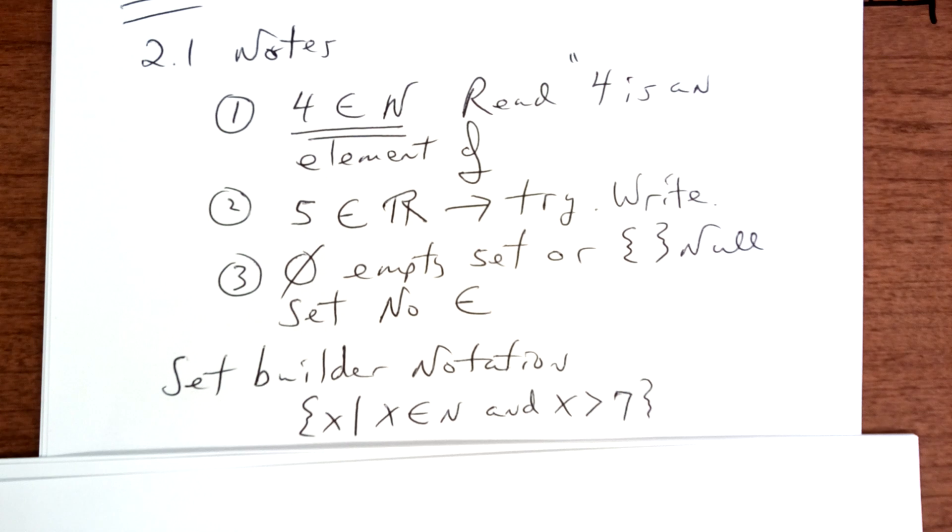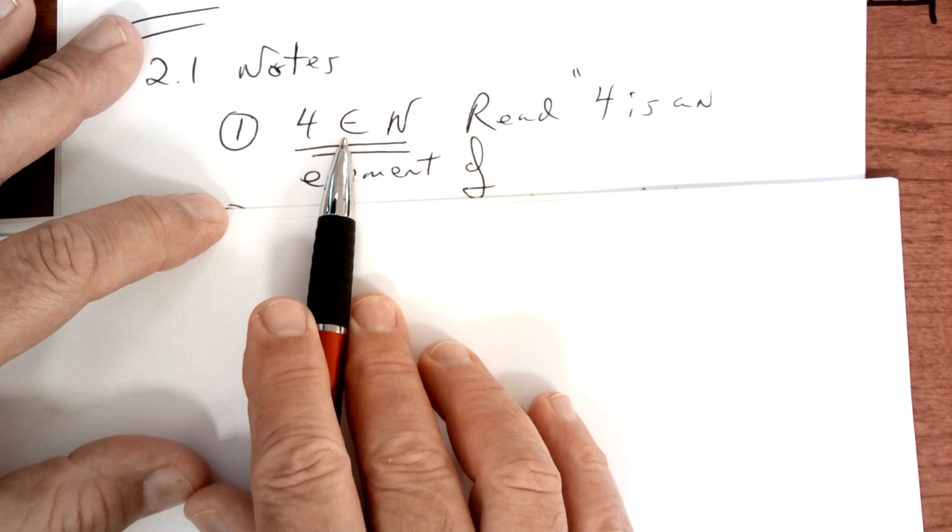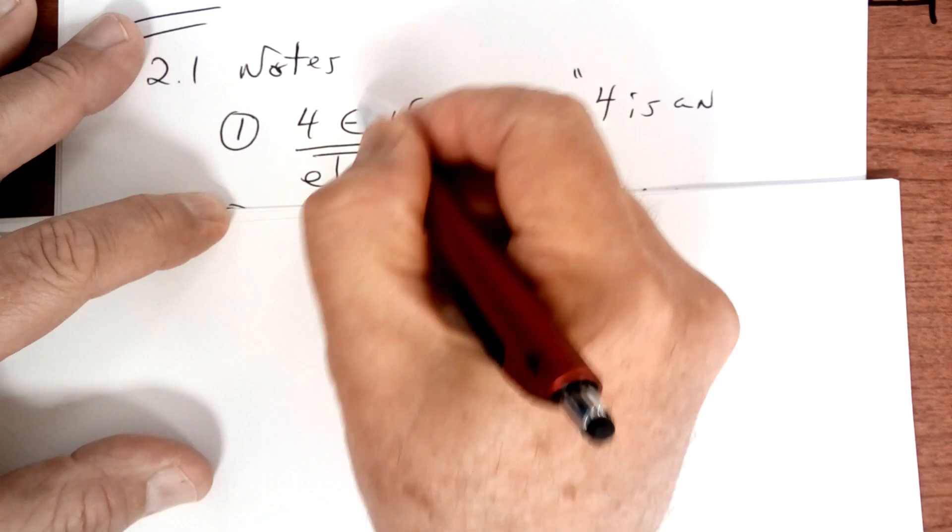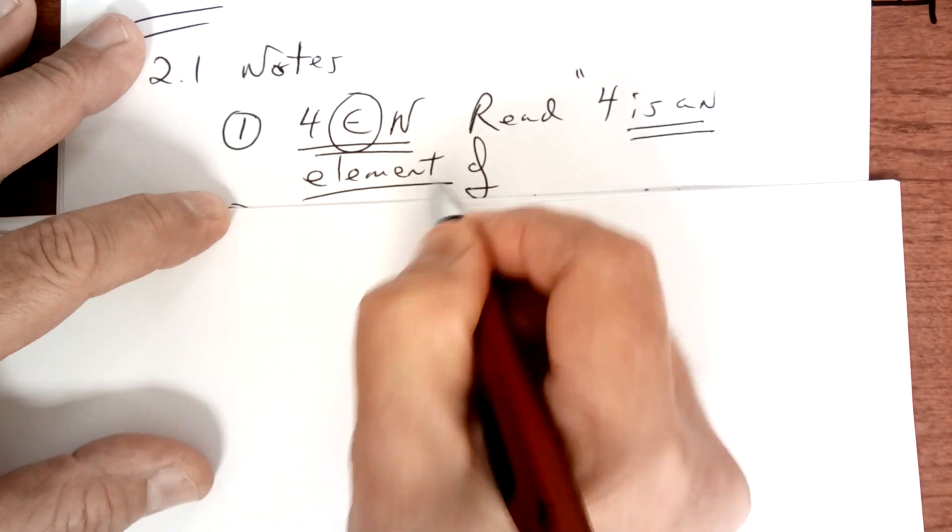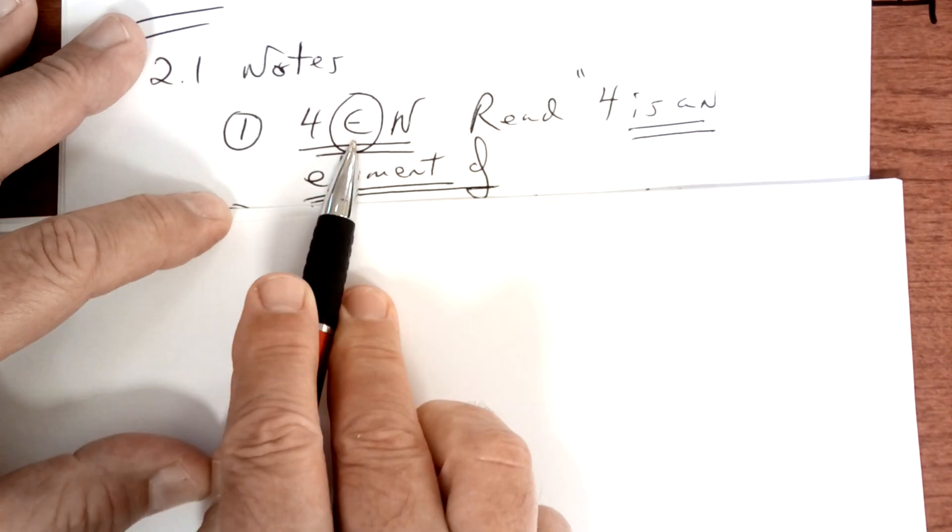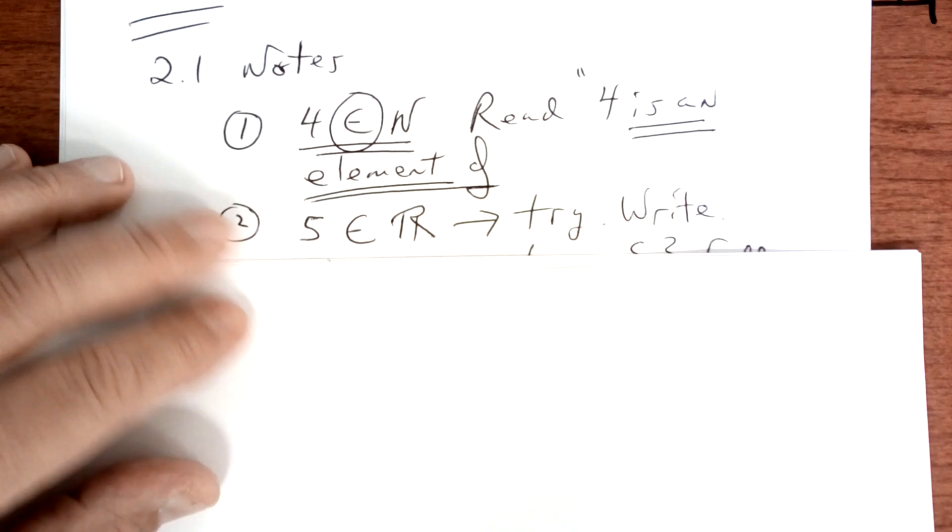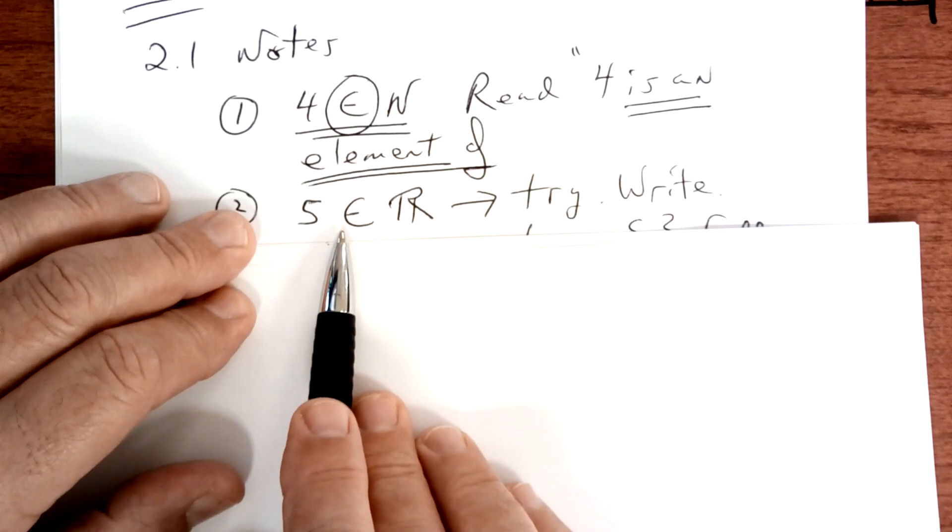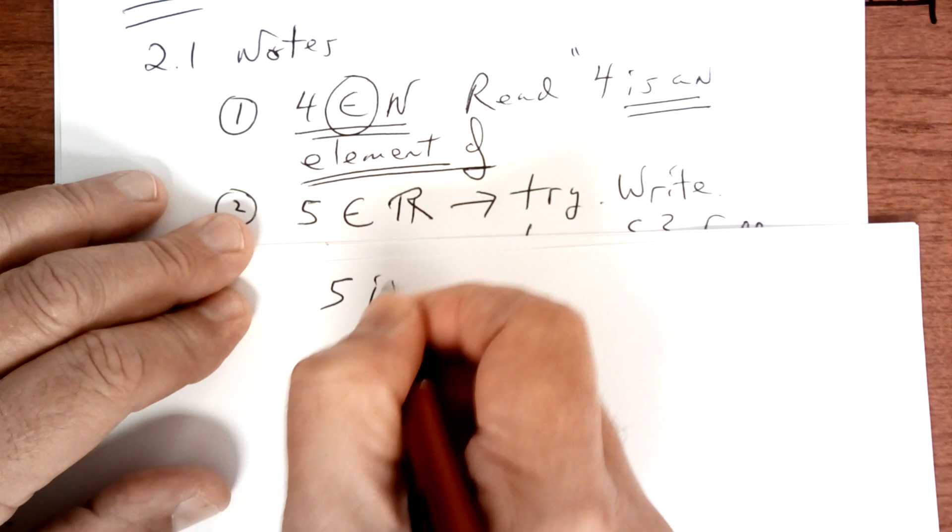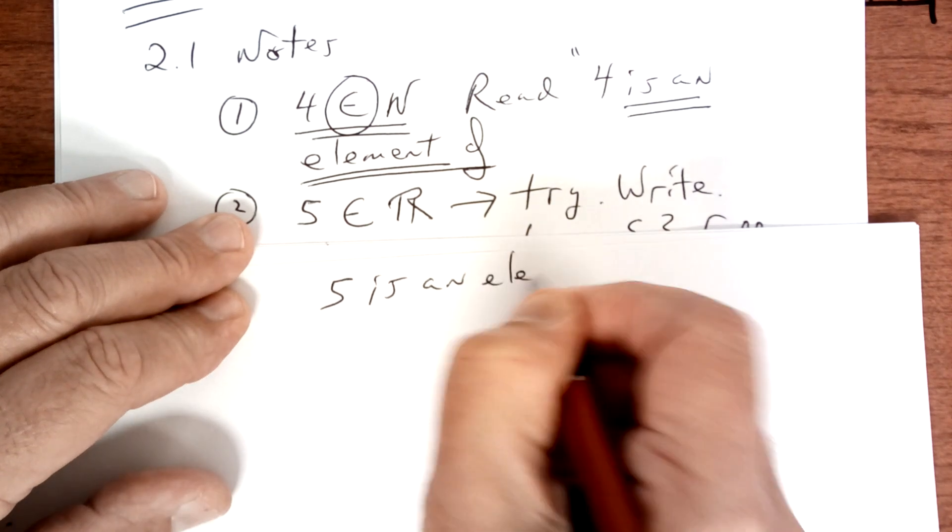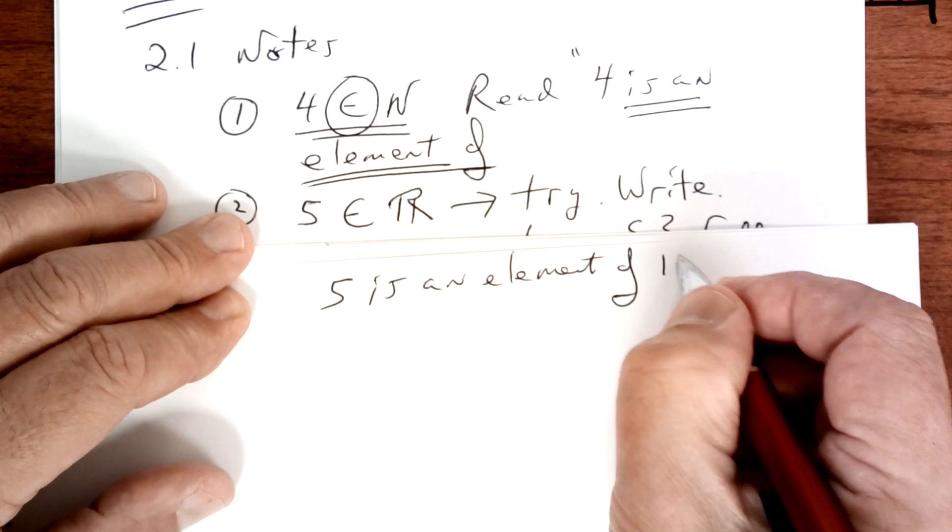Alright, so when you see this, this is read, four is an element of the natural numbers. Write that down. Is an element of. That's what that means. And that's true. I want you to write this one. Phi is an element of the real numbers. And that is true.